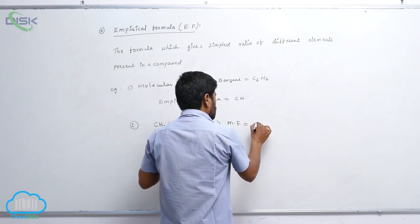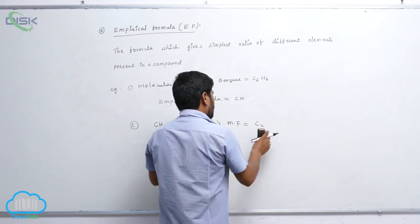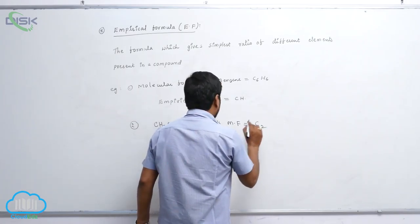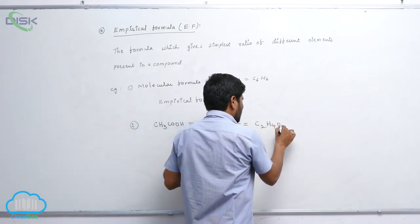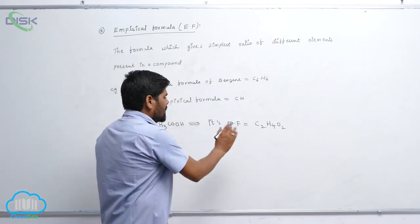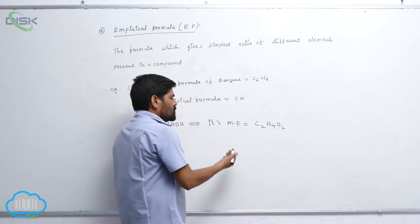How many carbon atoms? 2 carbon atoms. So therefore, C2. How many hydrogen? 4. How many oxygens? 2.